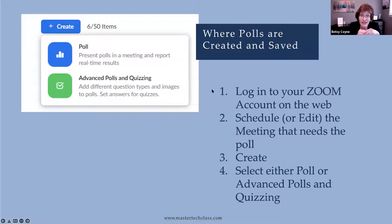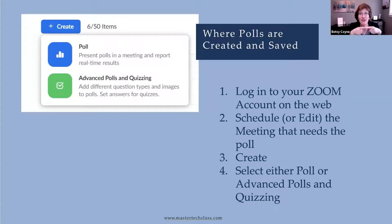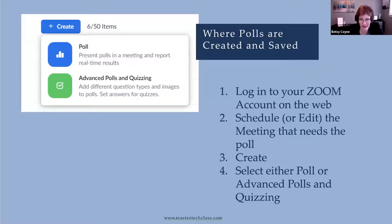Once you've logged into your web portal, you're then going to do step number two, which is — believe it or not — you have to schedule the meeting or edit the meeting in order to put the questions in. There isn't a poll menu where you say anytime that I have a meeting, I want to have these polls. No, you have to put the poll questions in that match the meeting that you're going to be holding. So once you schedule or edit it, you're going to click Create, and then you're going to select either Poll or Advanced Polls and Quizzing.